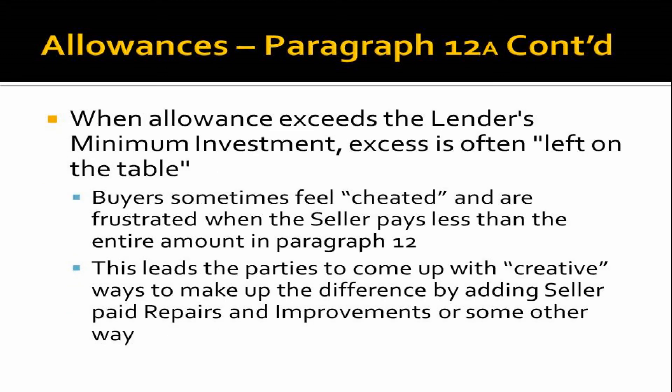When an allowance exceeds the lender's required minimum investment, what's left over doesn't go to the buyer. I've heard many arguments between listing agents and buyer's agents because the buyer feels cheated when the seller doesn't pay the entire amount shown in paragraph 12. This leads to parties sometimes coming up with creative ways to make up the difference — sometimes adding repairs and improvements or finding some other method of settling up the difference between the seller and the buyer.